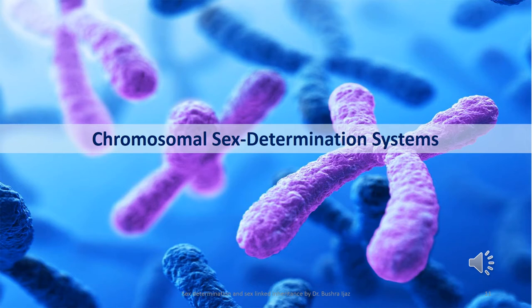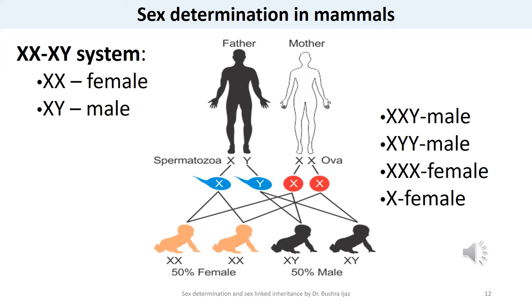In placental mammals, the presence of the Y chromosome determines sex. Normally, female cells contain two X chromosomes and male cells contain an X and a Y chromosome. Occasionally individuals are born with sex chromosome aneuploidies, and the sex of the individual is always determined by the absence or presence of the Y chromosome. Thus, individuals with 47 chromosomes carrying two X's and one Y, or one X and two Y's, are male. Individuals with 45 chromosomes and one X, or 47 chromosomes with three X's, are female.